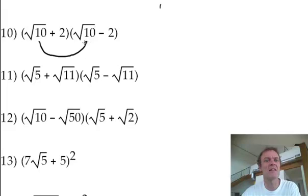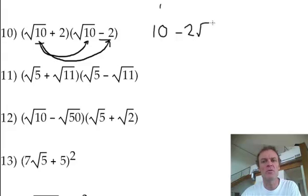First, what's root 10 times root 10? It's just 10. If you want to write root 100 and then realize you can square root it back to 10, you go ahead. Now, what's the outer? You can't do anything for this one except write negative 2 times root 10. It's negative 2 root 10. That's all you can do for that.